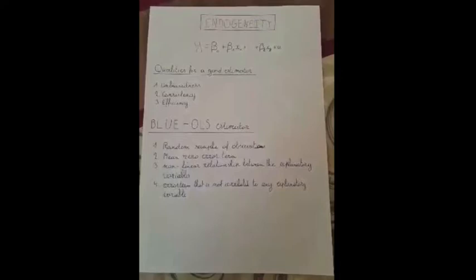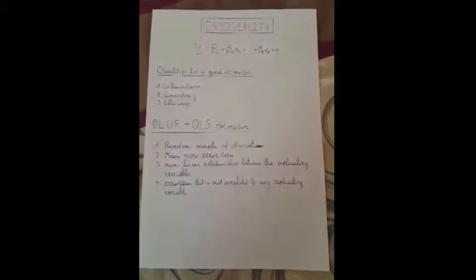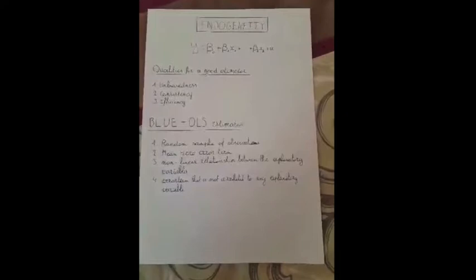The key conditions that have to be respected in order for the ordinary least squares estimators to be best linear unbiased estimators are one, a random sample of observations, secondly, a mean-zero error term, a third one is a non-linear relationship between the explanatory variables, and lastly, an error term that is not correlated to an explanatory variable.